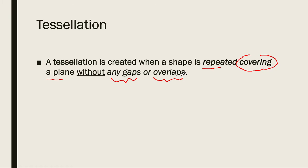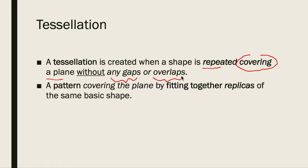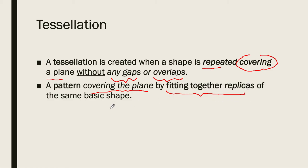It can also be thought of as a pattern covering the plane by fitting together replicas of the same basic shape. It may be reflected, translated, or dilated, but it's a replica of the same shape just to make it fit on a surface. That's what tessellation is.